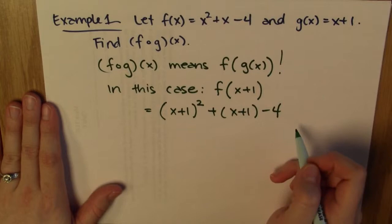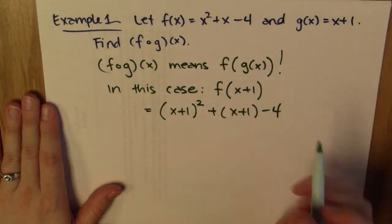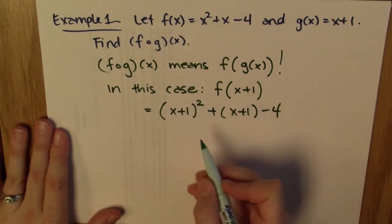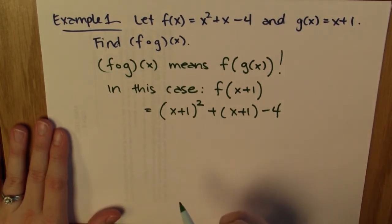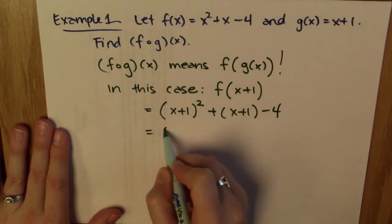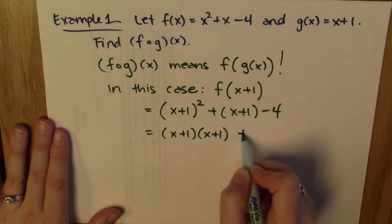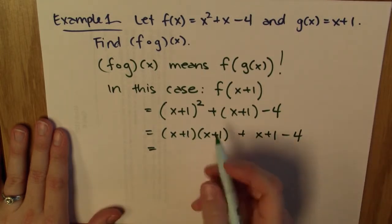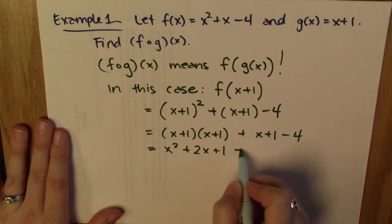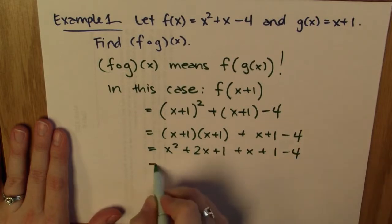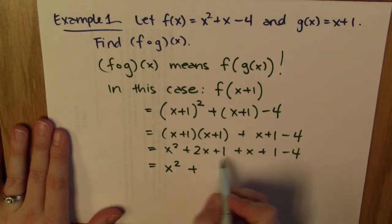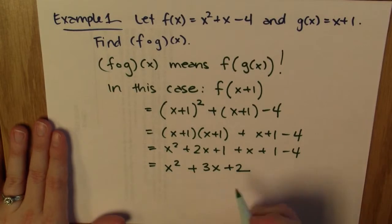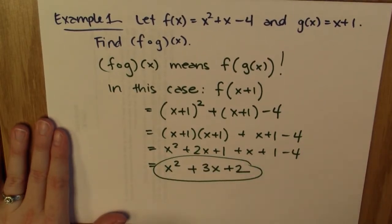Now I want to simplify this expression to figure out what f composed with g of x is. First, I expand x plus 1 squared — either using the FOIL method or by writing two copies of x plus 1 and distributing. That gives x squared plus 2x plus 1, plus another x plus 1, minus 4. Simplifying: x squared, then 2x plus x gives 3x, and 1 plus 1 minus 4 gives minus 2... which is plus 2. So the answer is x squared plus 3x plus 2.